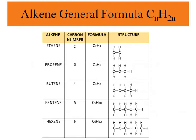For alkenes, the general formula is CₙH₂ₙ. Note that if there is more than one double bond, the formula changes — for example, two double bonds gives CₙH₂ₙ₋₂. Considering one double bond, the first alkene is ethene with two carbon atoms (C₂H₄), then propene with three carbon atoms (C₃H₆), both containing one double bond.